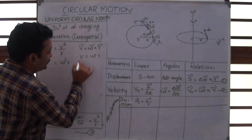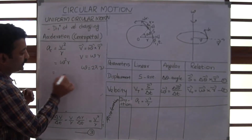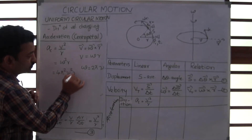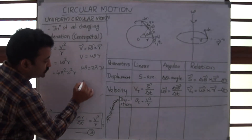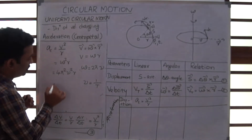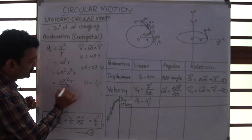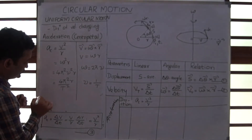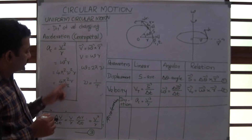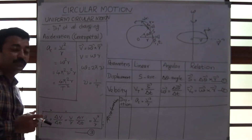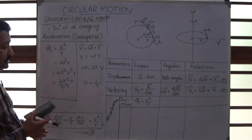Since omega equals 2 pi times nu, centripetal acceleration can also be written as 4 pi squared nu squared R. And since nu equals 1 over T, it can further be written as 4 pi squared R divided by T squared. These are the different expressions we will use for solving problems depending on which quantities are given. This completes the ideas on centripetal acceleration.